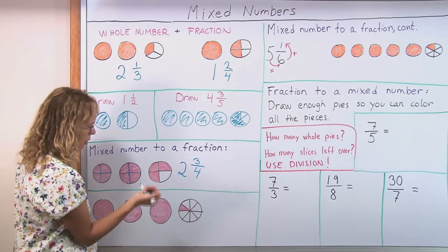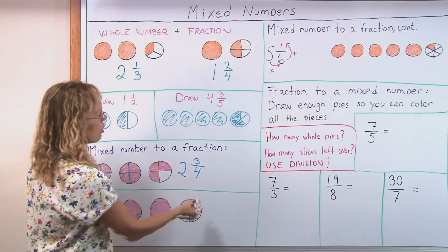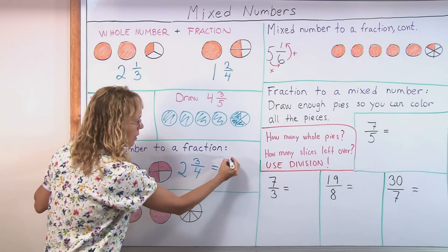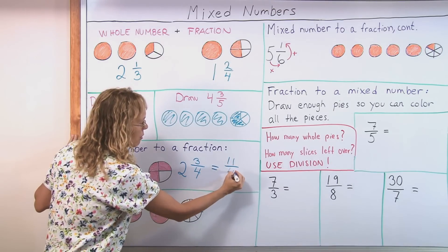five, six, seven, eight, nine, ten, eleven. Eleven fourths is the answer. Now it is a fraction. So many fourths.